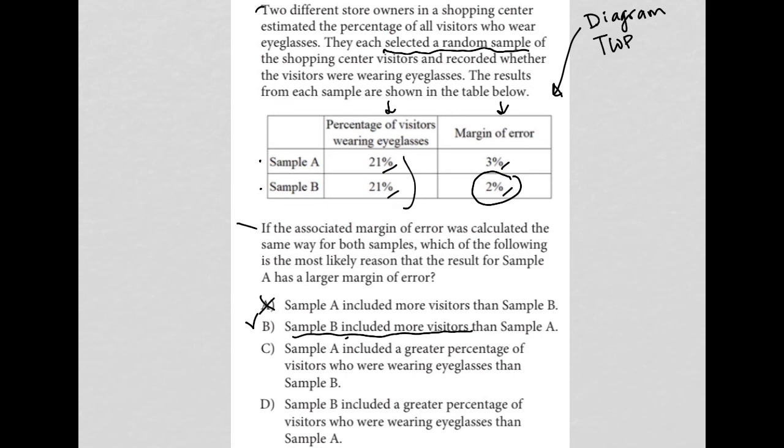Choices C and D both say sample A or sample B included a greater percentage of visitors, but they have the same percentage. So let's keep that in mind. C and D are therefore gone. B, I think is the best answer.